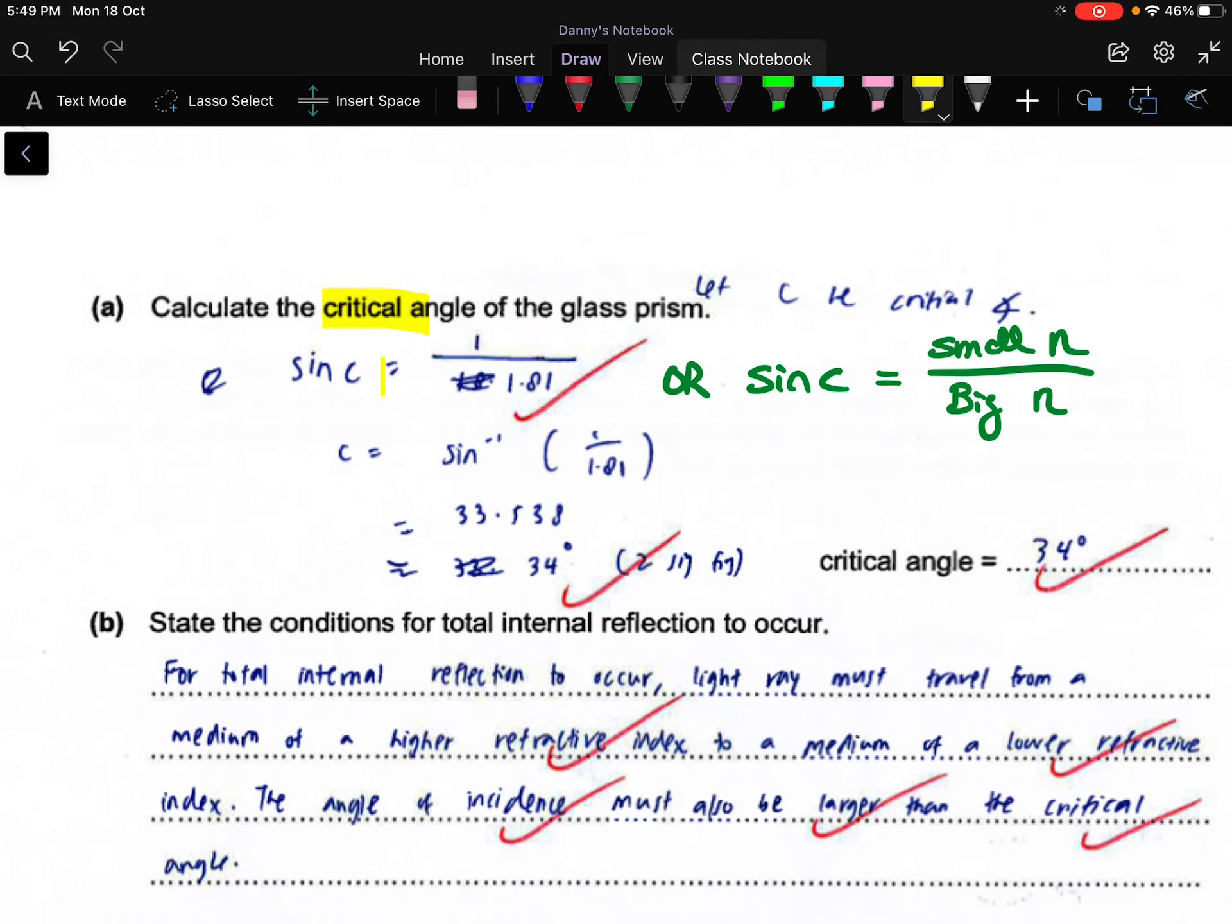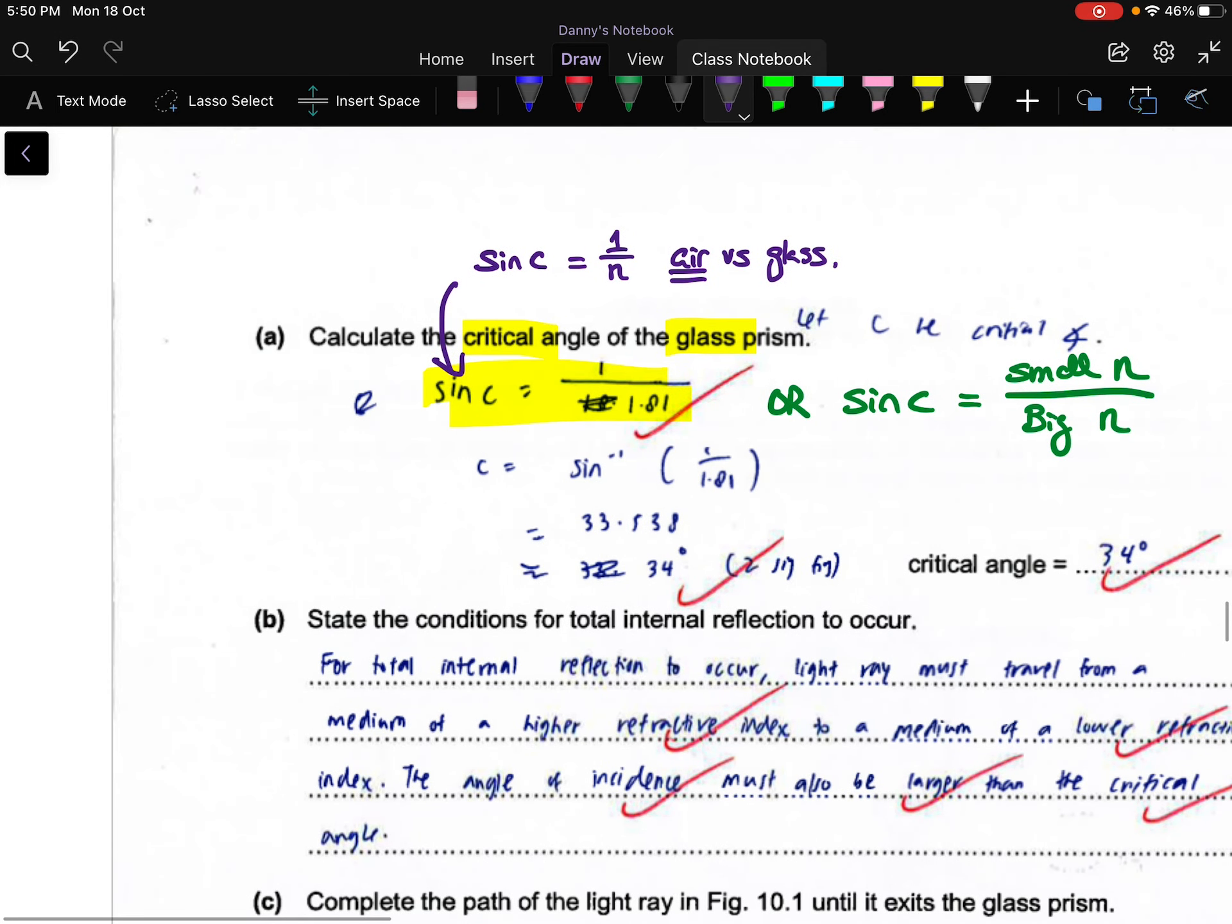In part a, we are asking you to calculate the critical angle of the glass. You can use the formula from the textbook, but there is a limitation to it. For this particular formula, sin C = 1/n, it can only be applied if the light is traveling between air and something else. In this case, the something else is glass, so there's a limitation here which is it must be air.